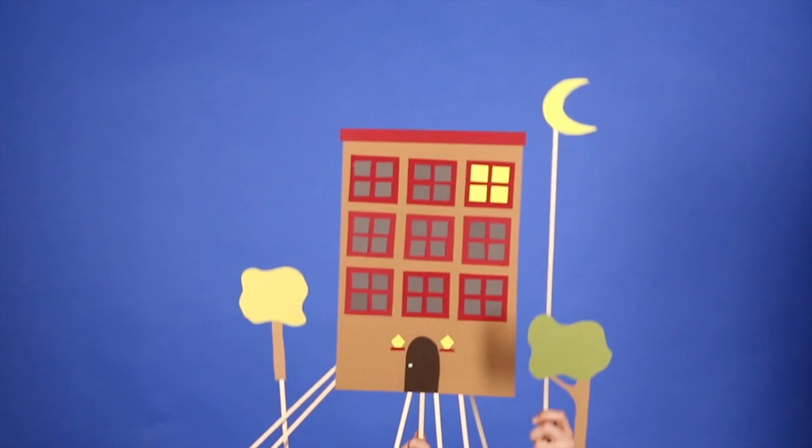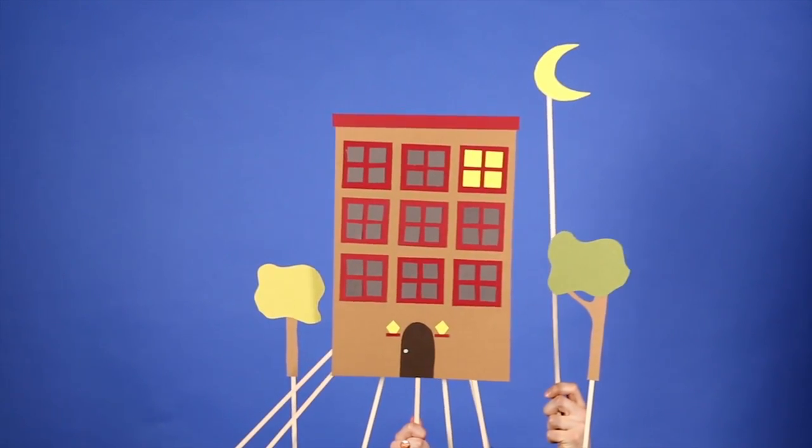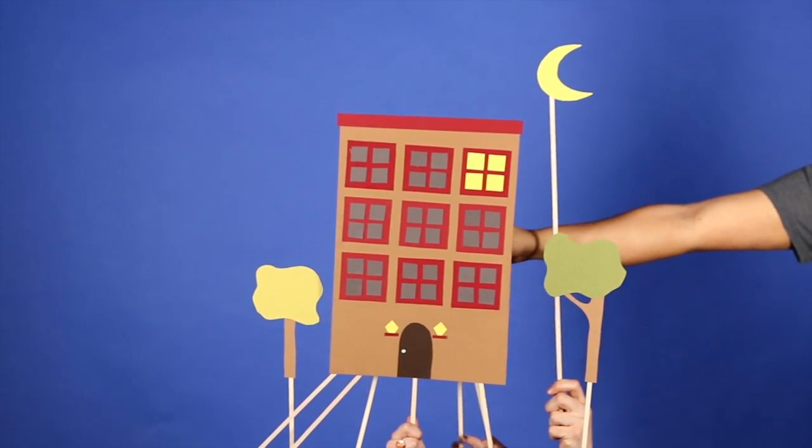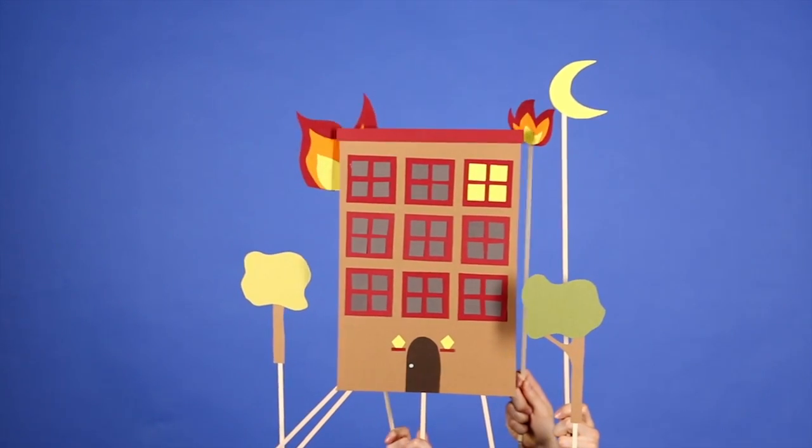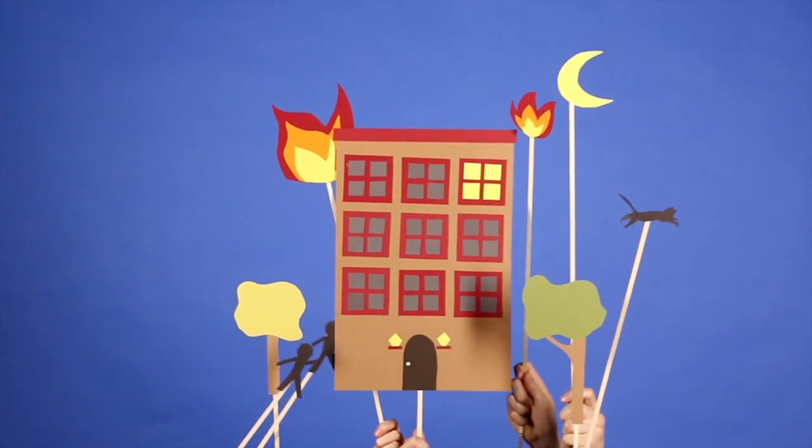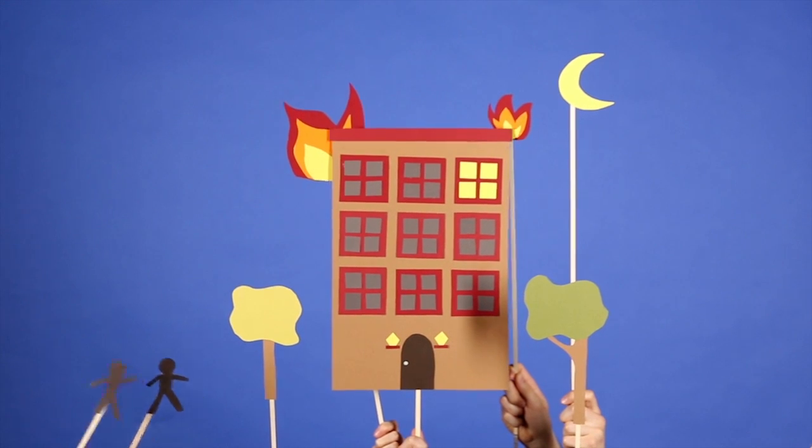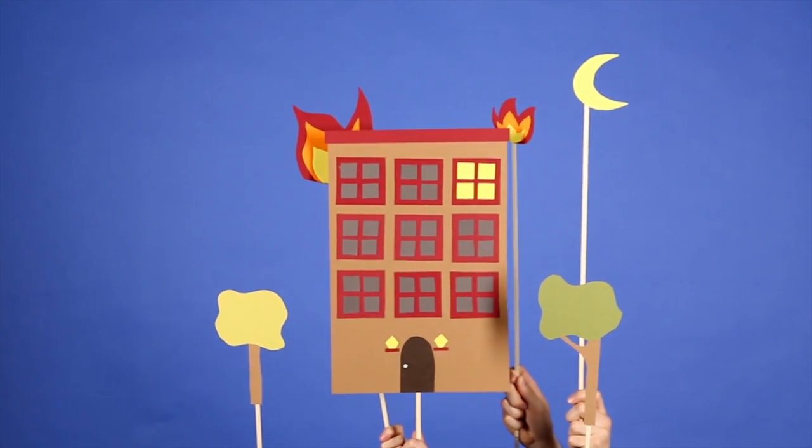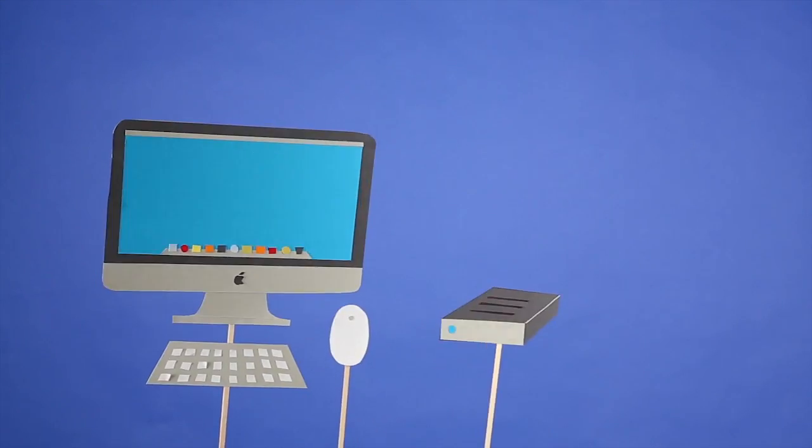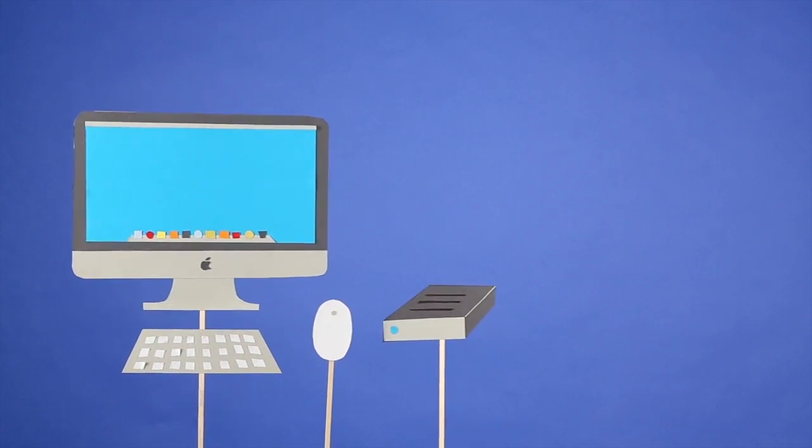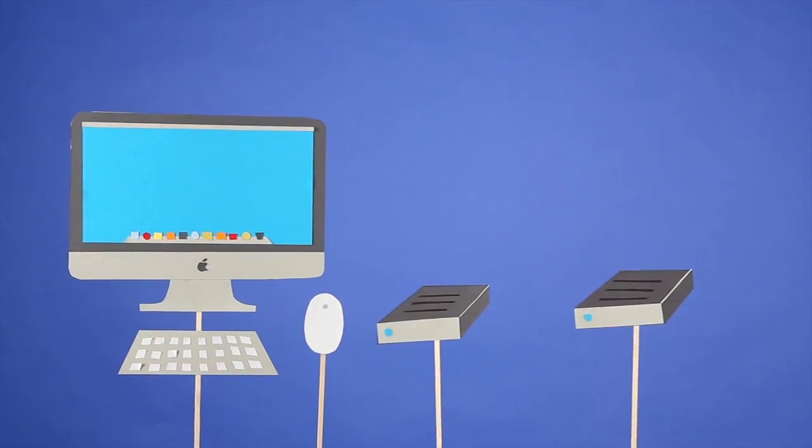Many people will stop right there, but what happens if your computer and hard drive get stolen or burn up in a fire? You need a third backup to keep off-site. This third drive should be a copy of the second drive to ensure redundancy.